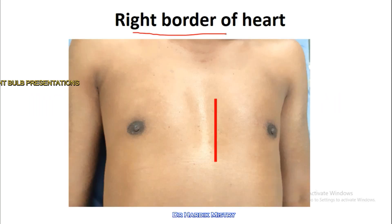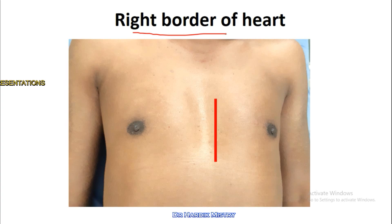The right border of the heart — we are not able to determine it because it is located behind the sternum bone, so we are not able to identify the right border of the heart.